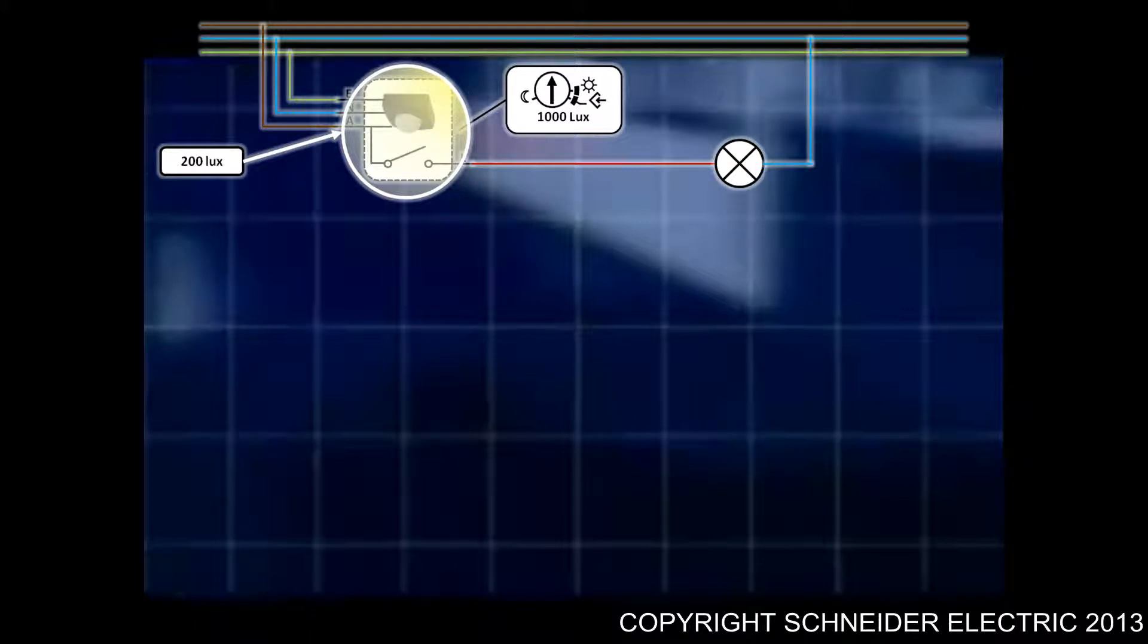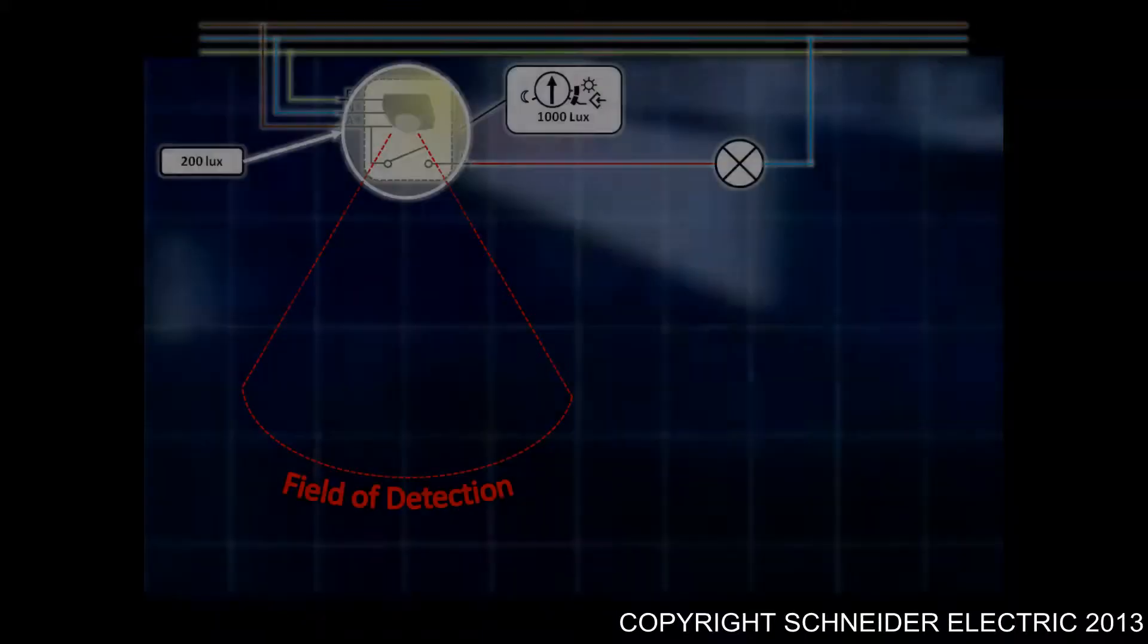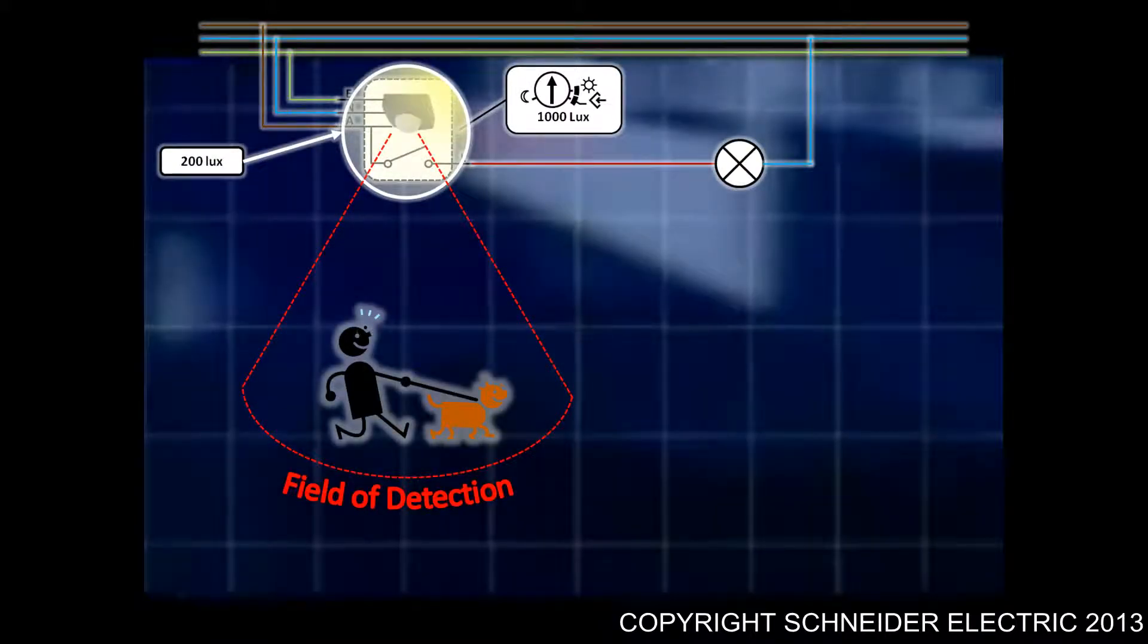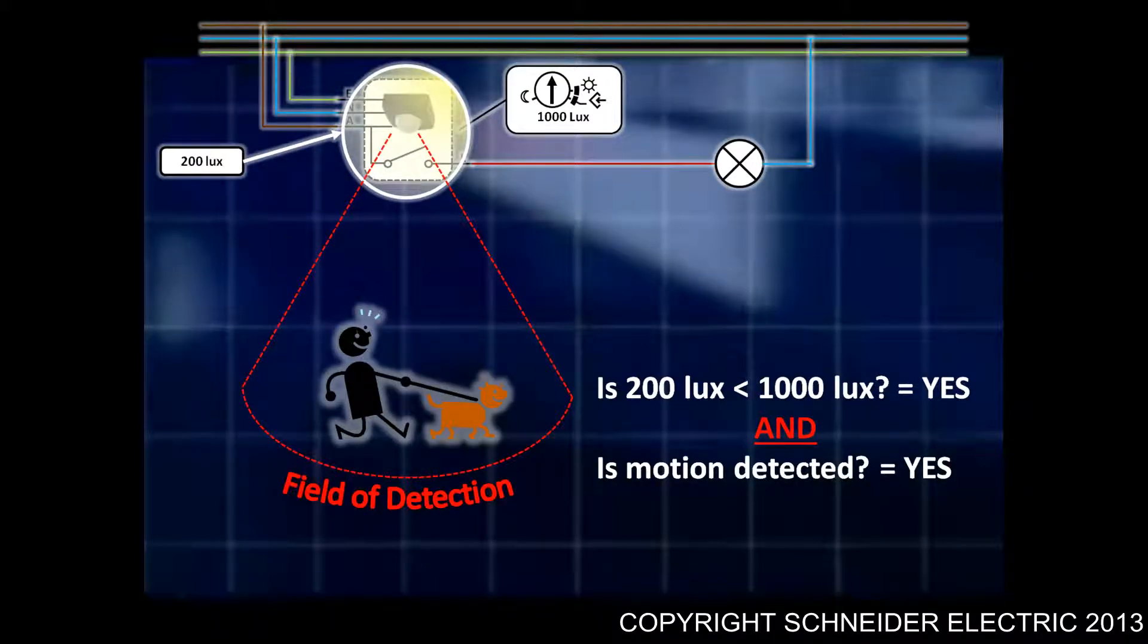What's popped up on this slide is an ambient light level of 200 lux. This is the light of the room or environment in which the sensor is installed. If movement is detected within the field of detection, the sensor basically asks two questions: Is the ambient light, in this case 200 lux, less than 1000 lux, which is that predetermined light level setting? In this case it is.